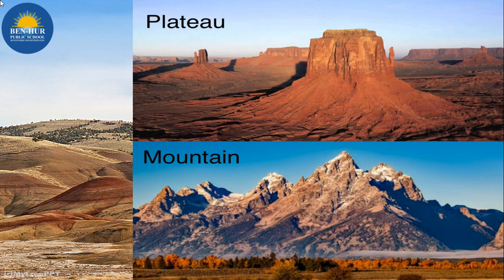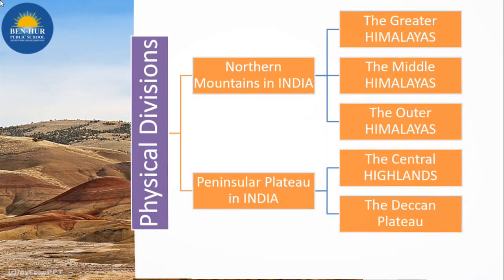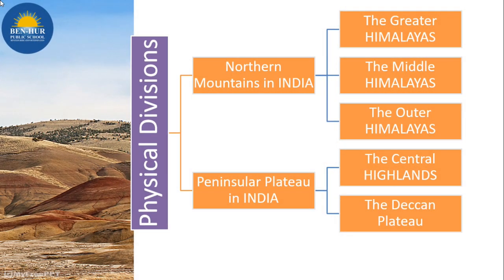Now, the physical divisions. India is divided into two parts: Northern Mountains in India and Peninsular Plateaus in India. Northern Mountains are divided into three parts: the Greater Himalayas, the Middle Himalayas, and the Outer Himalayas. Peninsular Plateaus are divided into two parts: the Central Highlands and the Deccan Plateaus.